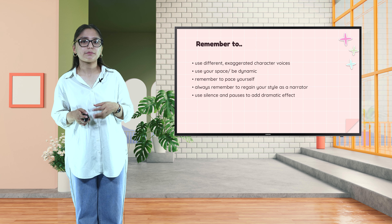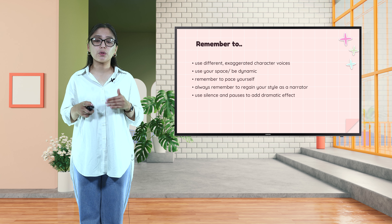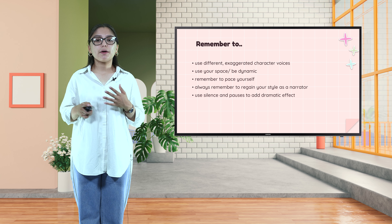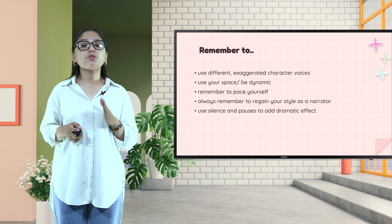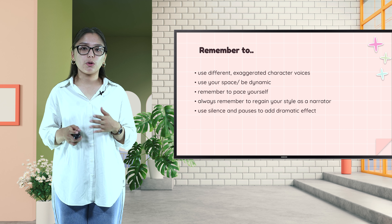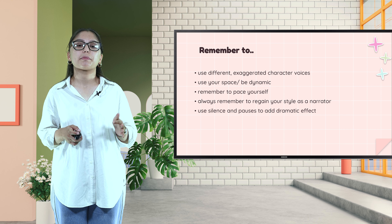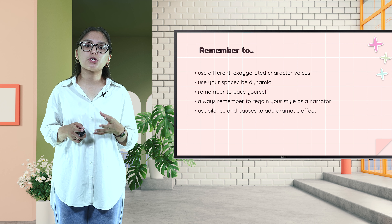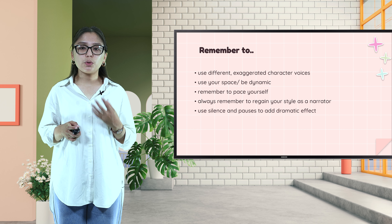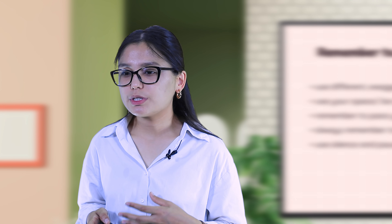Please be dynamic — don't sit still or stay in your place for a long time. Move from place to place, move around the room, and be highly dynamic when storytelling. Remember to pace yourself — it doesn't mean you should be active and moving all the time. You should find the golden middle: where to stop and where to continue and where to go to extremes. Always remember to regain your style as a narrator. It's not only about showing emotions or body language — it's also about making learners believe in your words, so you should have very good narrator skills. Sometimes you will also have to use silence and pauses to add dramatic effect.